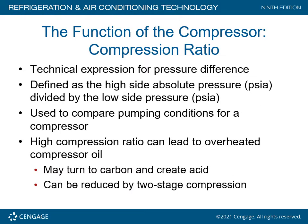Compression ratio is very important when determining if compressors are operating correctly. It is a technical expression for pressure difference, defined as the high side absolute pressure (PSIA) divided by the low side PSIA. The 'A' stands for absolute. You take the existing pressure you record and add 15, which compensates for atmospheric conditions in most cases.